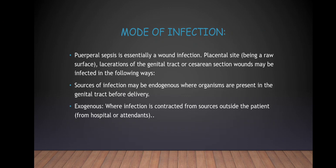Mode of infection: Puerperal sepsis is essentially a wound infection. The placental site being a raw surface, lacerations of the genital tract, or caesarean section wounds may be infected in the following ways. Sources of infection may be endogenous, where organisms are present in the genital tract before delivery, or exogenous, where infection is contracted from sources outside the patient — such as from the hospital or attendants.